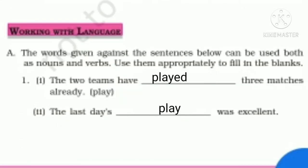The next exercise: words given against the sentences below can be used both as a noun and as a verb. We have to use that word appropriately in the blanks. First sentence: 'The two teams have dashed three matches already.' The word given is 'play.' Here it is used as a verb, so we write 'have played.' In the second sentence, 'The last day's play was excellent,' play is used as a noun.